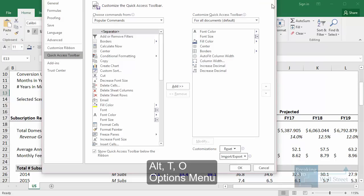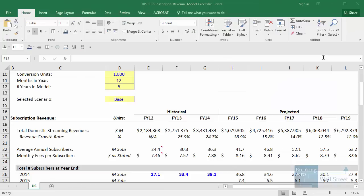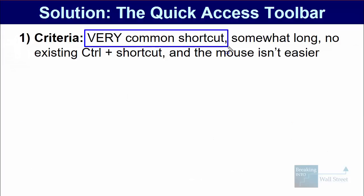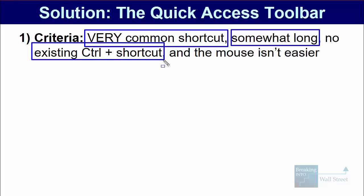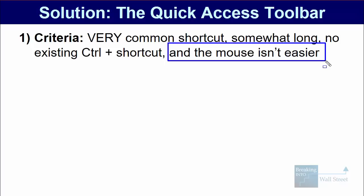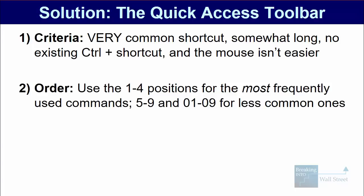You can choose the commands that you enter here. For a command to make sense in this menu, it has to be a very common shortcut, somewhat long and cumbersome to enter — existing control shortcuts aren't good candidates because they're already easy and fast. It also has to be something where the mouse is not easier. This has to be something best accomplished with a keyboard shortcut but where an easy and fast built-in one does not exist. We recommend using positions one to four for the most frequently used commands, and five through nine and zero-one through zero-nine for the less common ones.